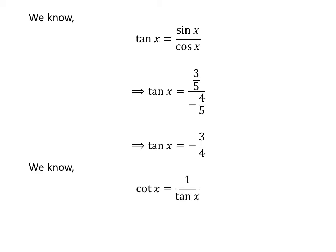We know the reciprocal of tangent of x is cotangent of x. So cotangent of x is equal to minus 4 upon 3.